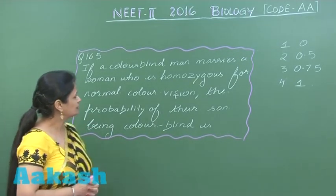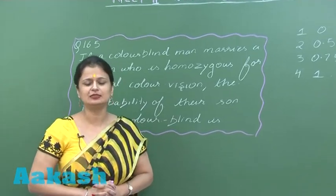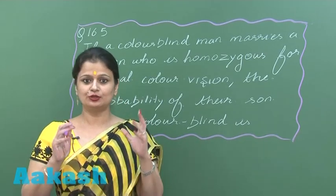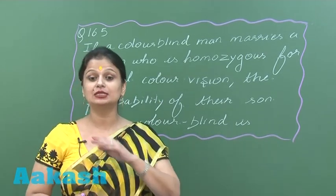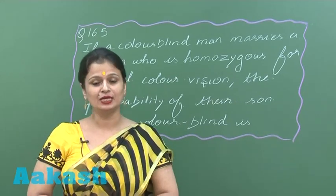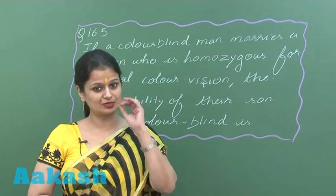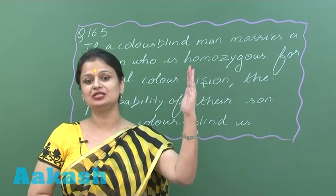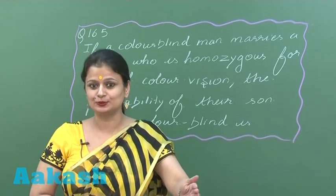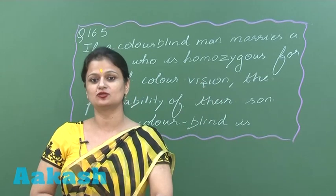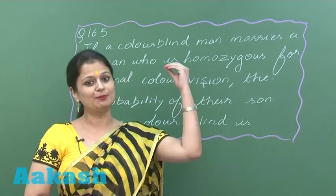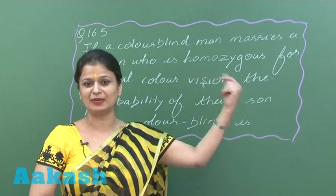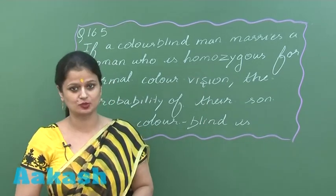Question number 165 is about color blindness. Color blindness is an X-linked recessive disorder. In X-linked recessive disorders, criss-cross inheritance is followed — that is, the gene on the X-chromosome of the male is never transferred to the son, only to the daughter. So male-to-male inheritance is absent; the inheritance pattern is from male to female. This is called criss-cross inheritance.